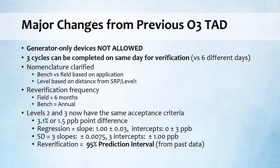The nomenclature has been clarified. Bench versus field is based on application — bench is a standard that is stationary, field is one that's moved from station to station. The level is based on the distance from the SRP. Our transfer standard is currently considered a level three because it's used in the field, but going forward it's going to be considered a level two because it's verified directly against the level one and used in the field — so it will now be considered a level two field. The re-verification frequency will still be the same six months for field transfer standards, and a bench standard requires re-verification annually.